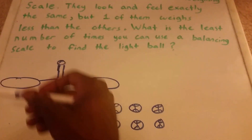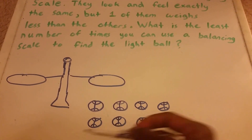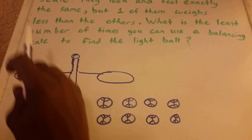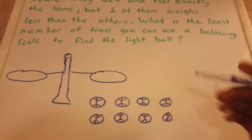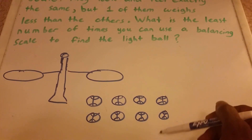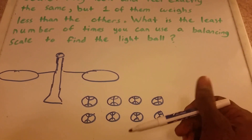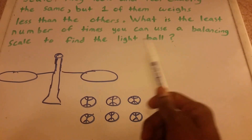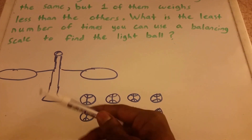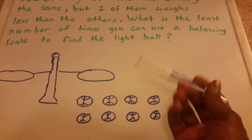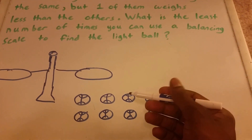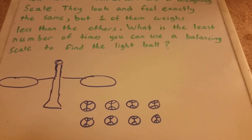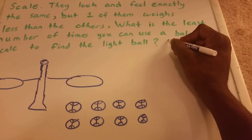To write this out as a picture, more visual, I have a scale here — the normal balance scale — where you can put something on one side and the other side tips up. And I have our eight basketballs below. We want to know what is the least number of times you can use a balancing scale to find the light ball. I'm going to give you the answer: the answer is two.